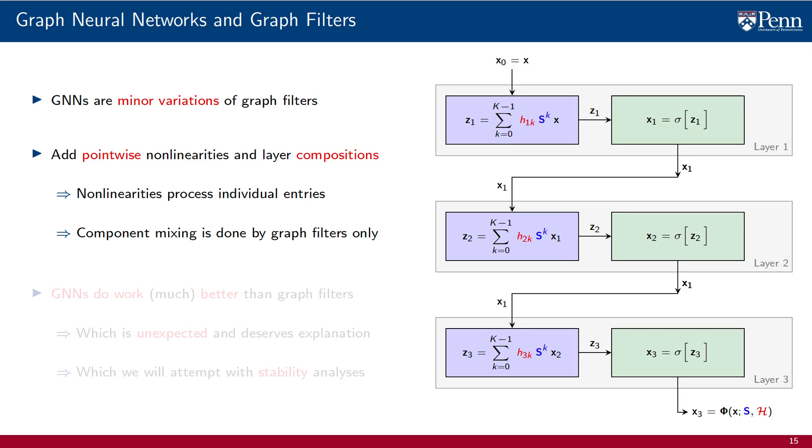A consequence of this observation is that if we understand the behavior of graph filters, we also understand the behavior of GNNs. There is little difference between one and the other. They are conceptually very close relatives.